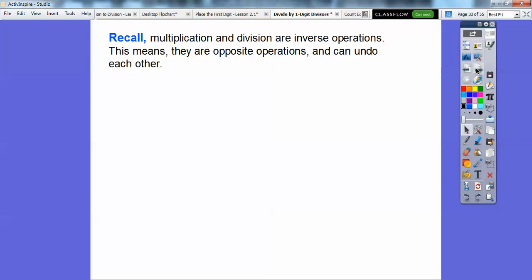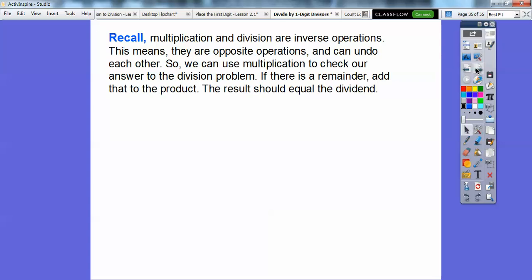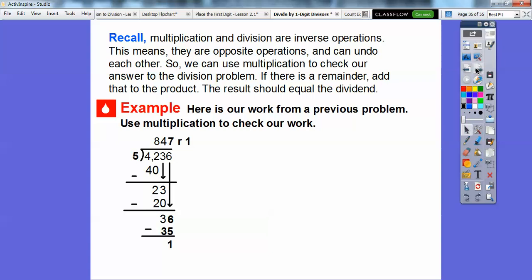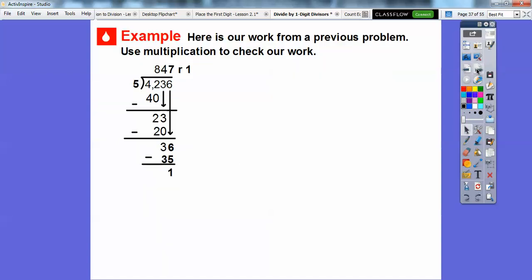Recall that multiplication and division are inverse operations. That means they are opposite operations, and they can undo each other. So we can use multiplication to check our answers to a division problem. And if there's a remainder, then we just add that to the product. So the result should equal what our dividend was. Here's a question that we did in the last example. Here's our work from a previous problem. We're going to use multiplication to check our work.